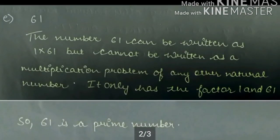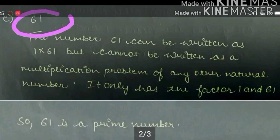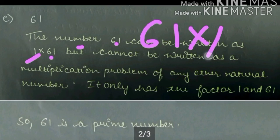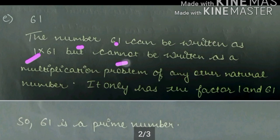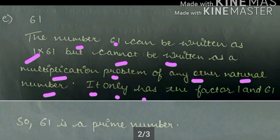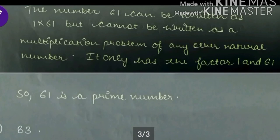Next part: 61. The number 61 can be written as 1 into 61 or 61 into 1, but cannot be written as a multiplication of any other natural number. It only has the factors 1 and 61.